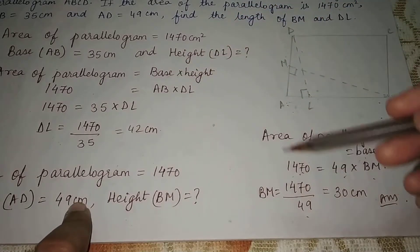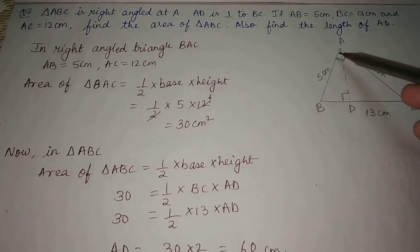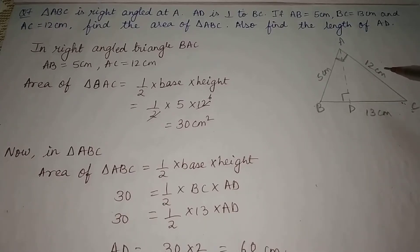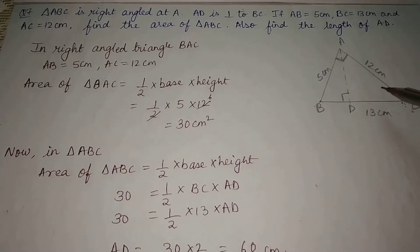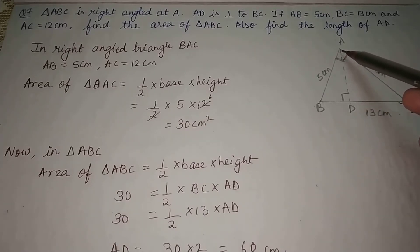Now question number 7: triangle ABC is right-angled at A, and AD is perpendicular to BC. Since AD is perpendicular to BC, AD is the height and BC is the base. AB, BC, and AC values are given, and we are told to find the area of triangle ABC and also the length of AD.